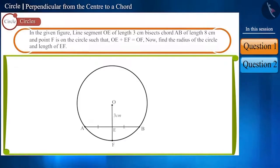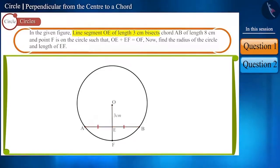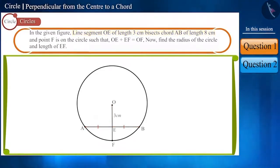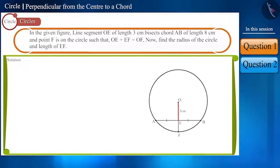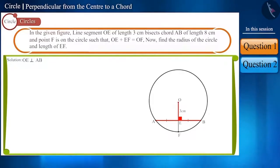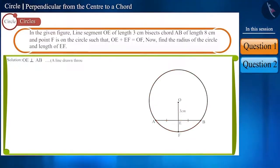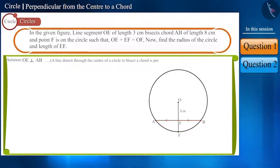Let's solve this. We are given that line segment OE bisects the chord AB. In the figure, you can see that point O is the centre of the circle. So, line segment OE will be perpendicular to chord AB, because a line drawn through the centre of the circle to bisect a chord is perpendicular to the chord.